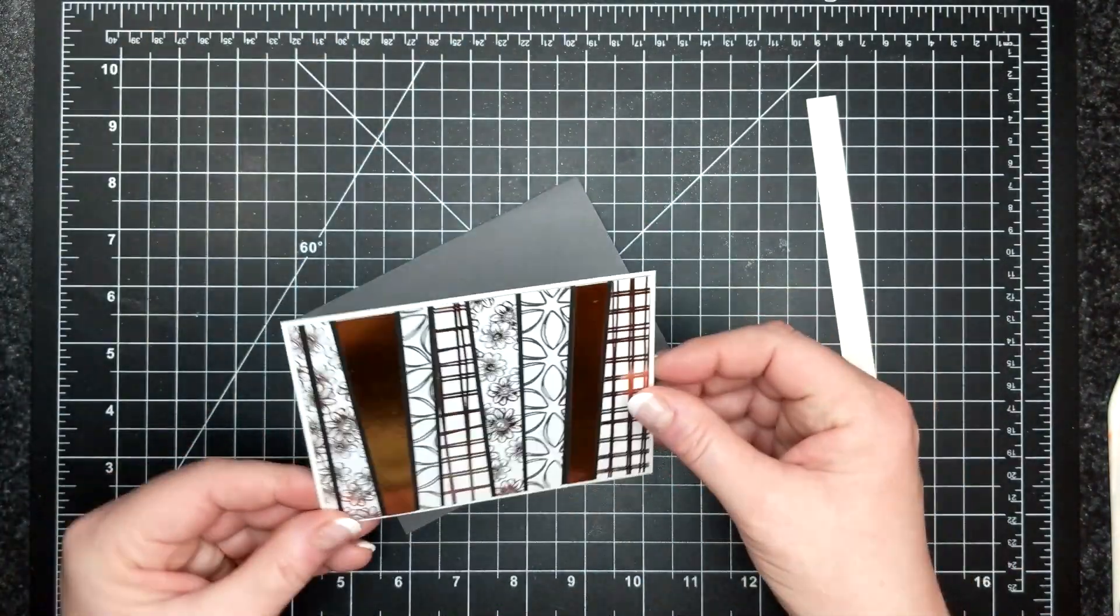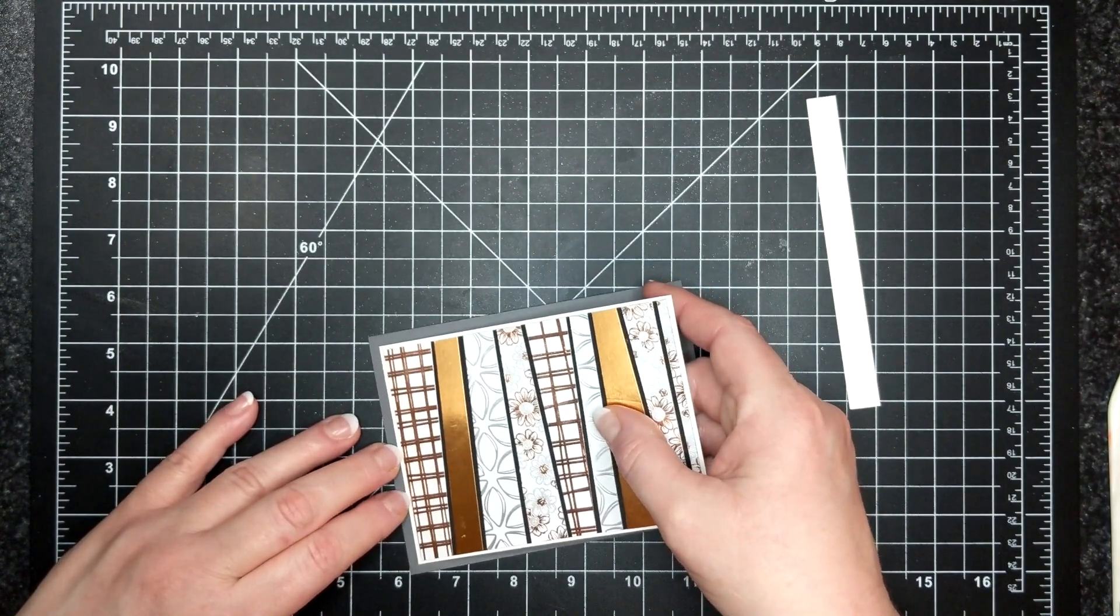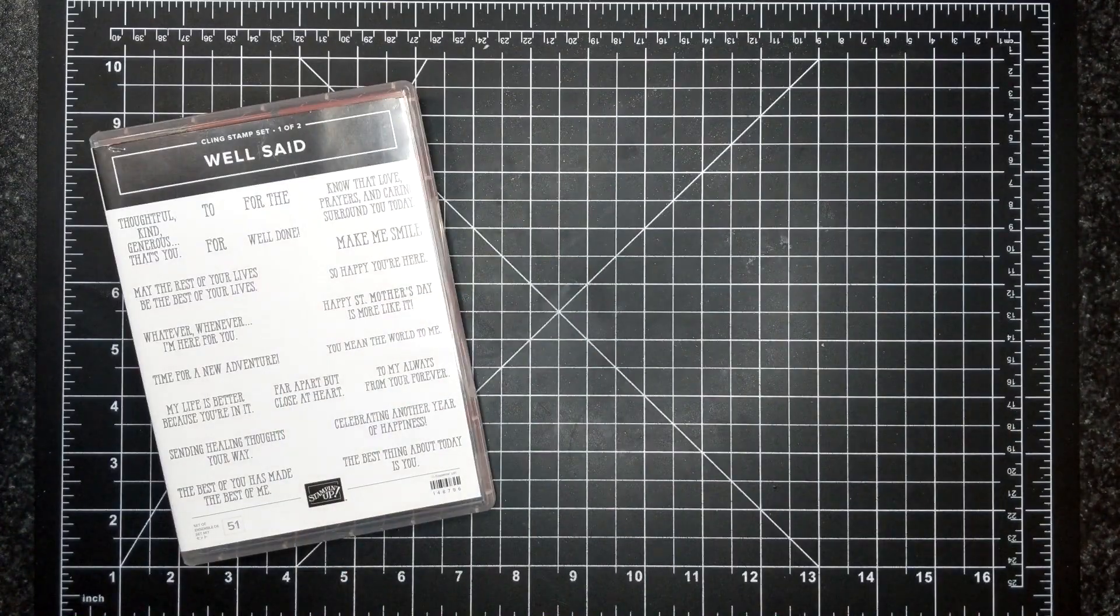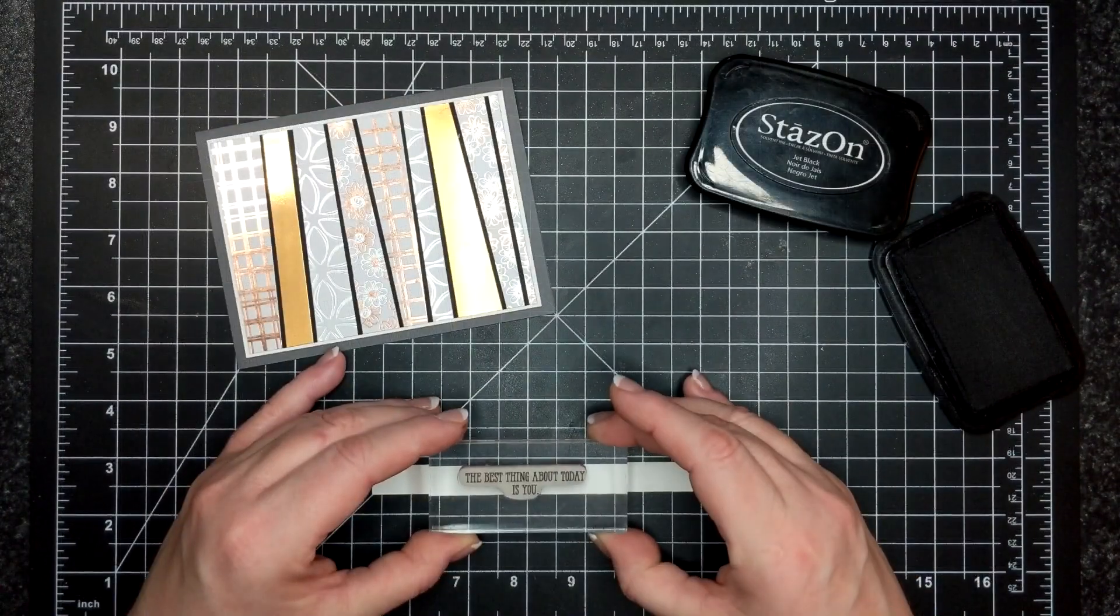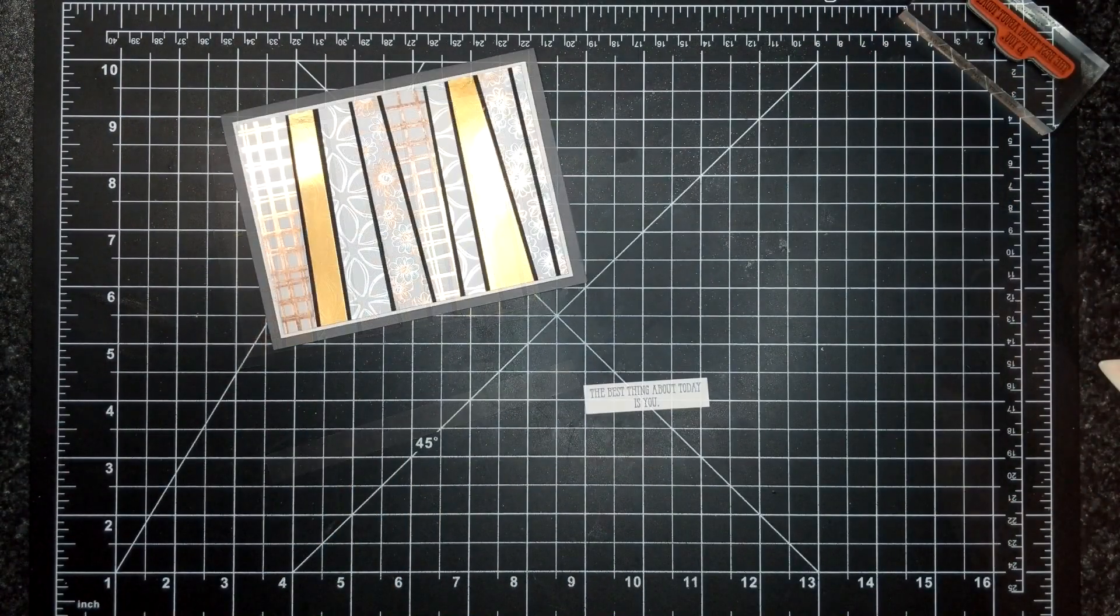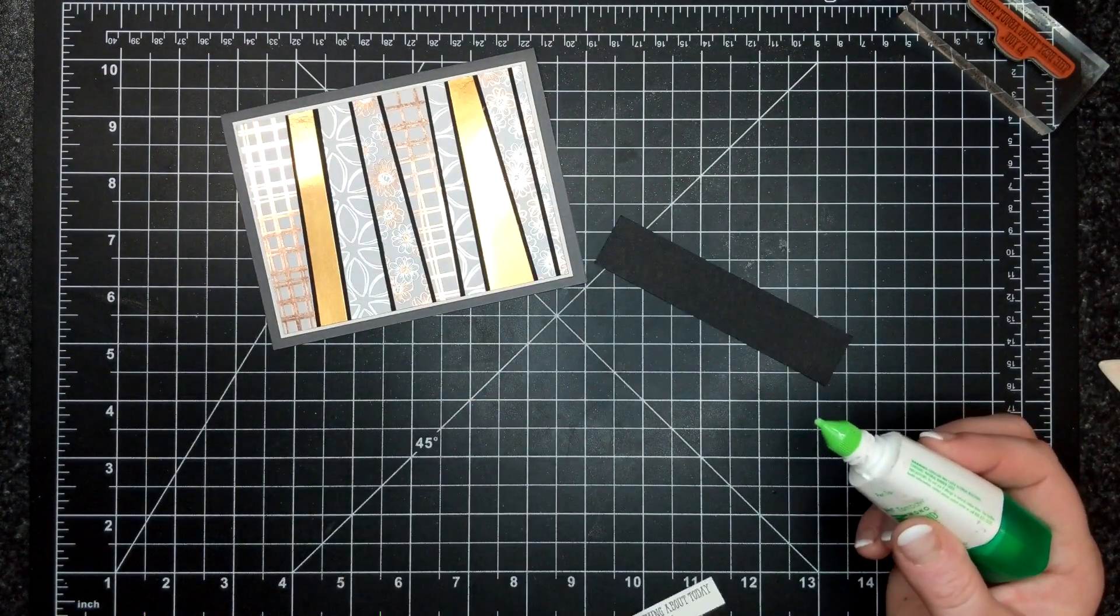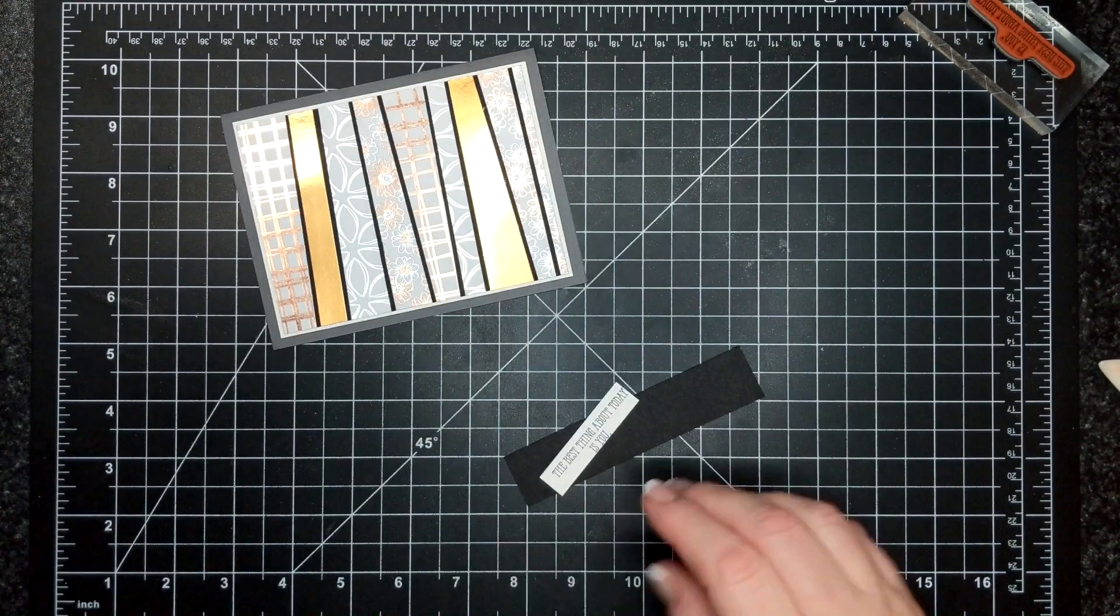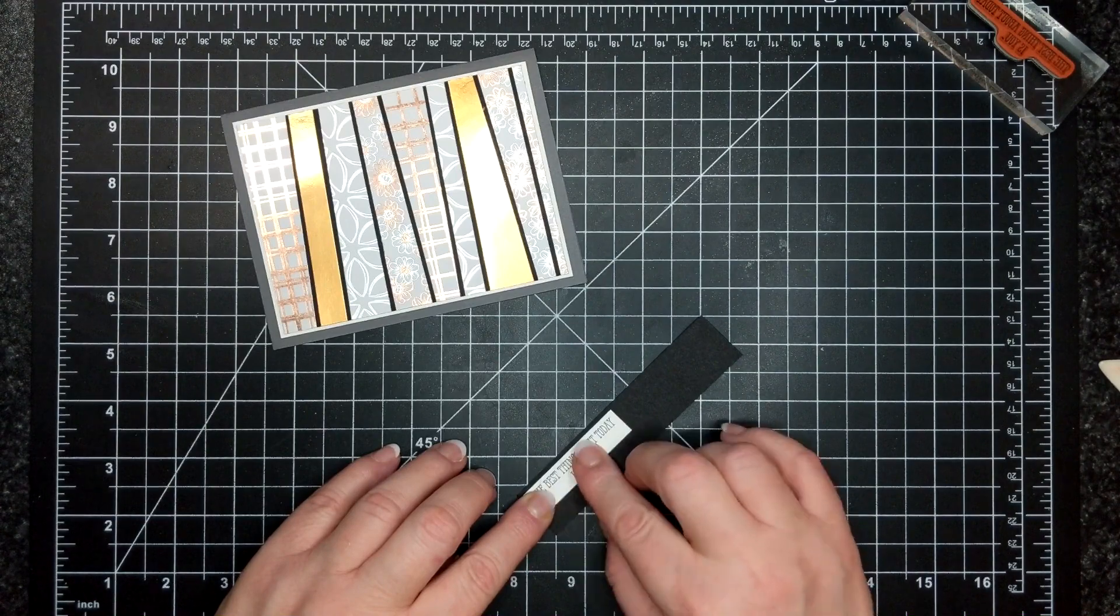You can see I have a little whisper white piece of strip here and that is for the sentiment. I am using Well Said which is a red rubber stamp and you know how I love StazOn ink so that's what I chose to use. You can use whatever ink and whatever sentiment that you have at home. It says the best thing about today is you.